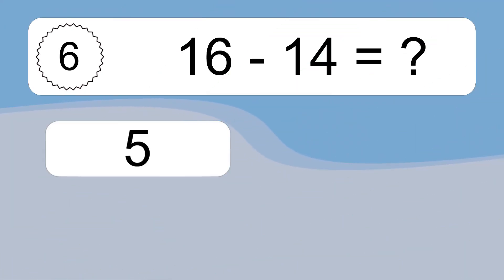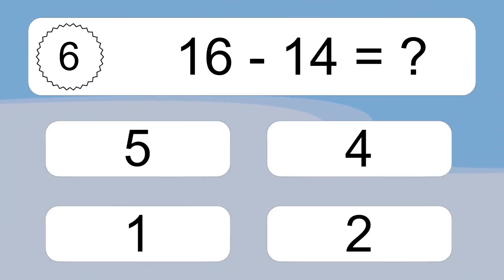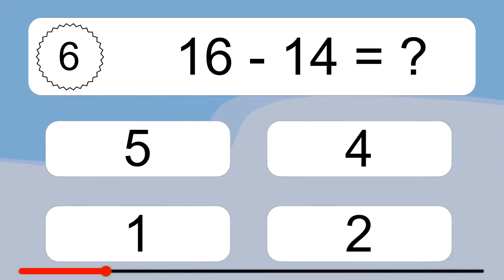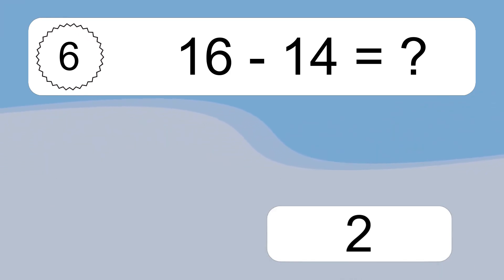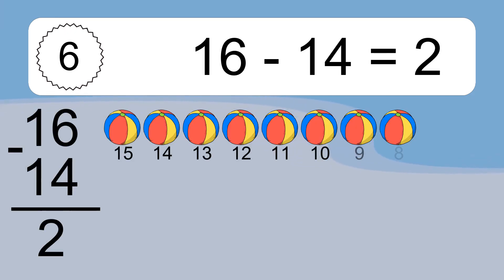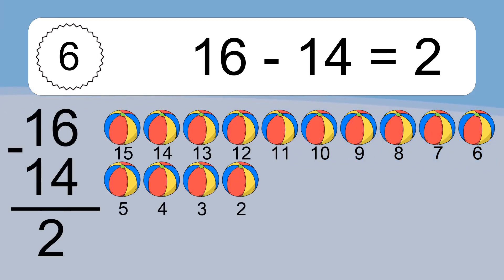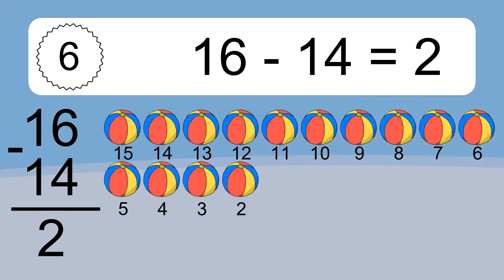16 minus 14 equals what? 16 minus 14 equals 2. Let's count it: 15, 14, 13, 12, 11, 10, 9, 8, 7, 6, 5, 4, 3, 2.